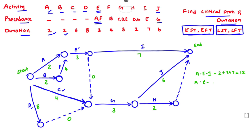Path A–E–G–J: 2 + 3 + 3 + 6 = 14 days. Path B–F–E–I: B = 2, plus F = 4 gives 6, plus E = 3 gives 9, plus I = 3 gives 12 days. Path B–F–E–G–J: 2 + 4 = 6, plus 3 = 9, plus 3 = 12, plus 6 = 18 days.